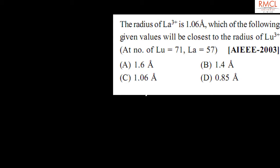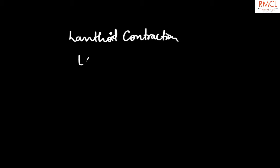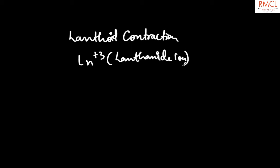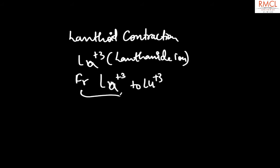We know that in lanthanum, the lanthanoid contraction has started. Lanthanoid contraction — and Ln³⁺ is the lanthanoid ion. So from La³⁺ to Lu³⁺, the radius decreases progressively due to lanthanoid contraction.